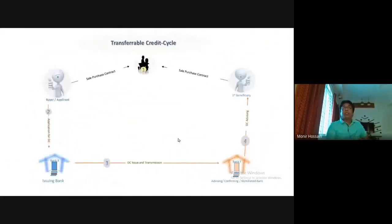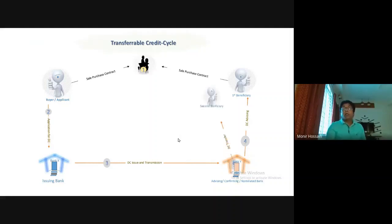You can see the scenario of transferable credit here. This is the normal cycle — a credit cycle, the first credit. Now, in the transferable credit, the second beneficiary enters the scene.